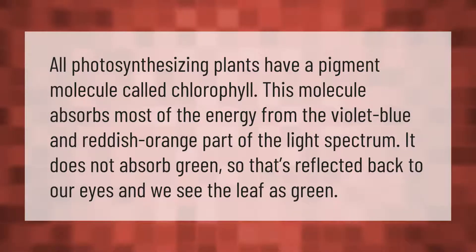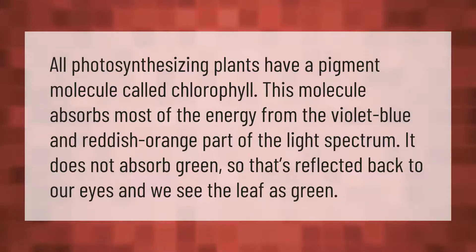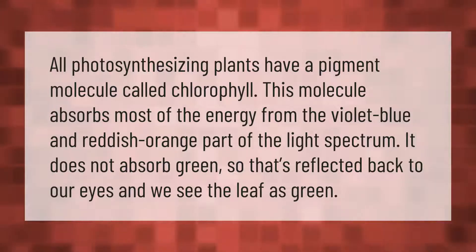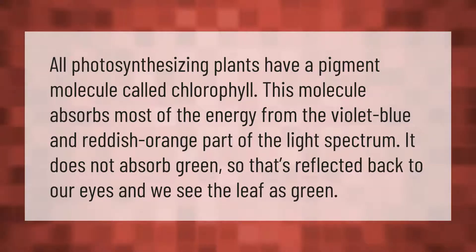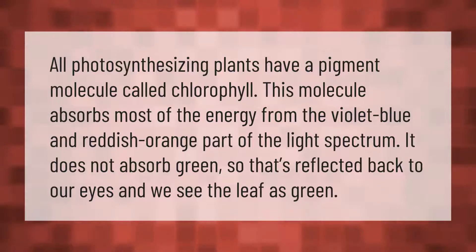All photosynthesizing plants have a pigment molecule called chlorophyll. This molecule absorbs most of the energy from the violet, blue, and reddish-orange part of the light spectrum. It does not absorb green, so that's reflected back to our eyes, and we see the leaf as green.